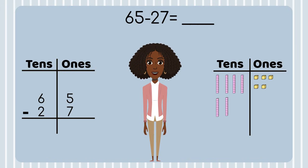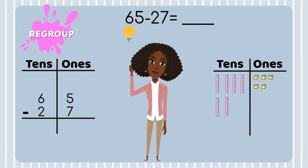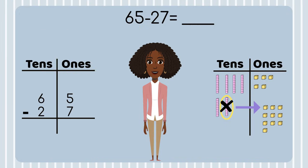Can you tell me which place value spot we start subtracting in? The ones place — we wouldn't want to ruin our math problem. How many ones do we have? How many do we need to subtract? Do we have enough to subtract seven? No, we don't. So what will we do? We will regroup. Let's get a ten and move it into the ones place. Now we have five tens. Remember that once we move a ten to the ones place, it breaks apart into ten ones.